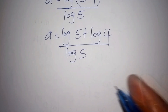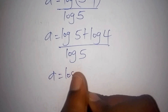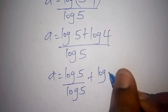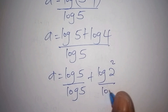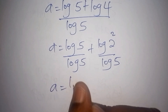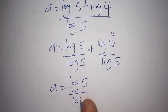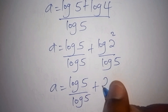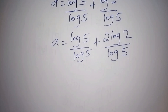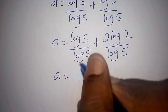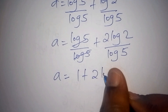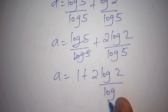So A is equals to log 5 over log 5, plus log 4 over log 5. Note that log 4 can also be written as log of 2 to the power of 2, giving us 2·log 2 over log 5. Now log 5 and log 5 cancel, so we have A equals 1 plus 2·log 2 all over log 5.